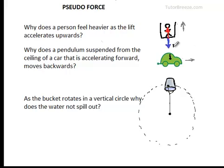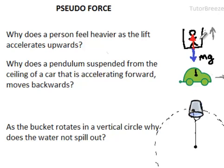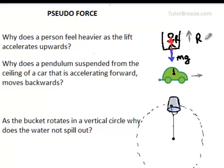When I am standing in the lift, my weight mg acts downwards and the reaction R from the lift acts upwards. If I am at rest in this accelerating lift, the net force on my body is 0, or I can say R is equal to mg. Now, R is the weight that I feel. But if I feel heavier, there has to be some force in addition to my weight that is pulling me downwards. What is this force?